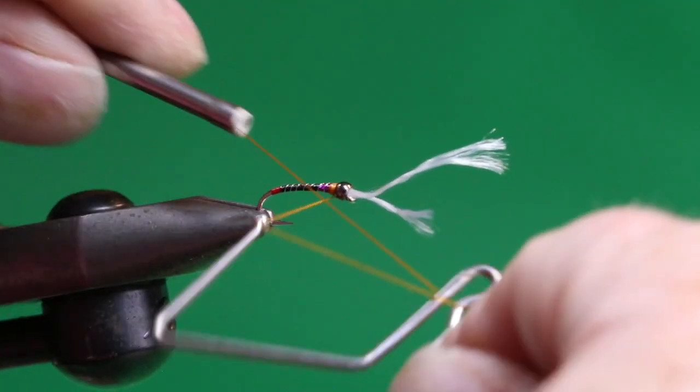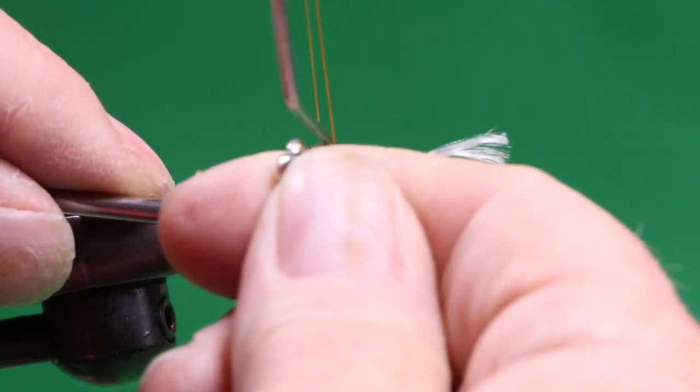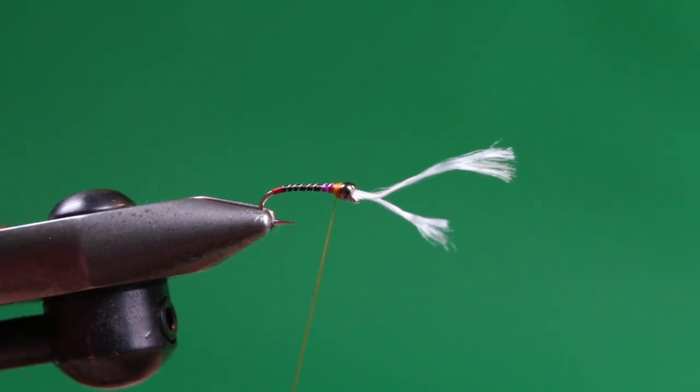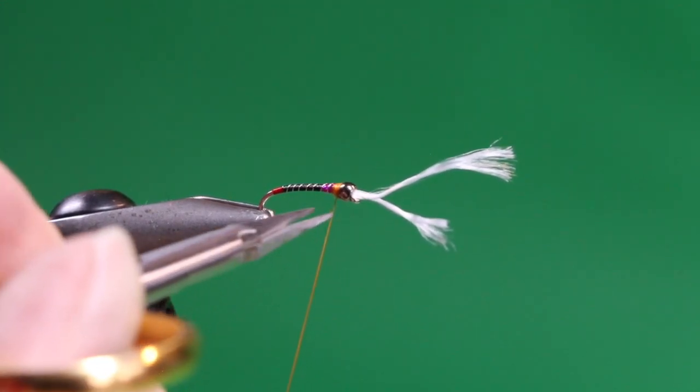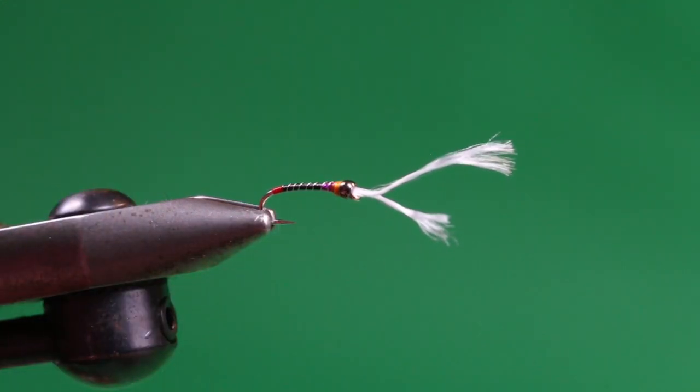Pull down and whip finish. Three turns is ample, because this fly is going to get a durable coating. And then very sharp scissors, or you can use a straight edge too, just come in and trim away the thread. The tying portion's done.